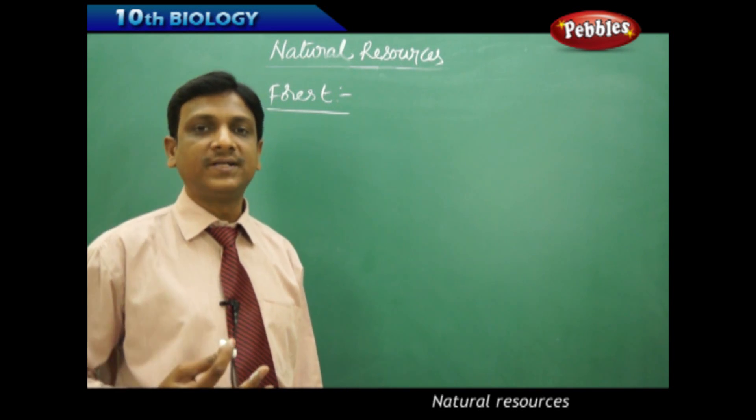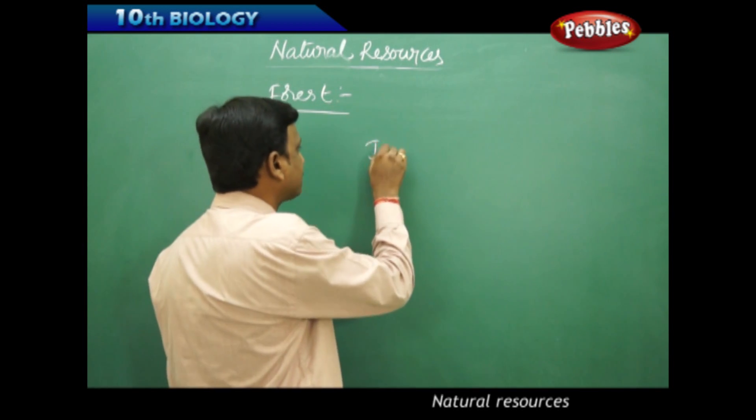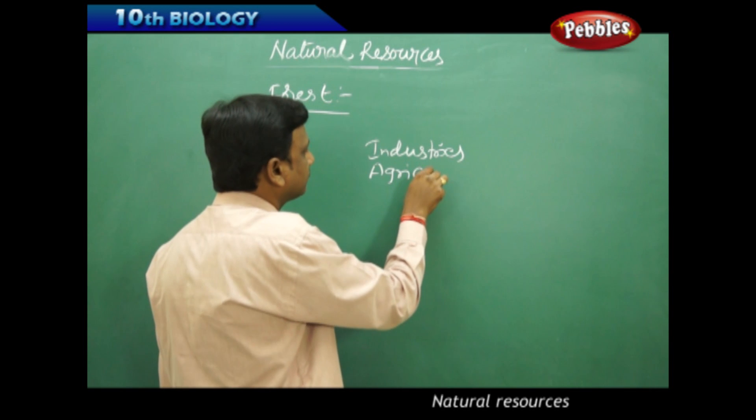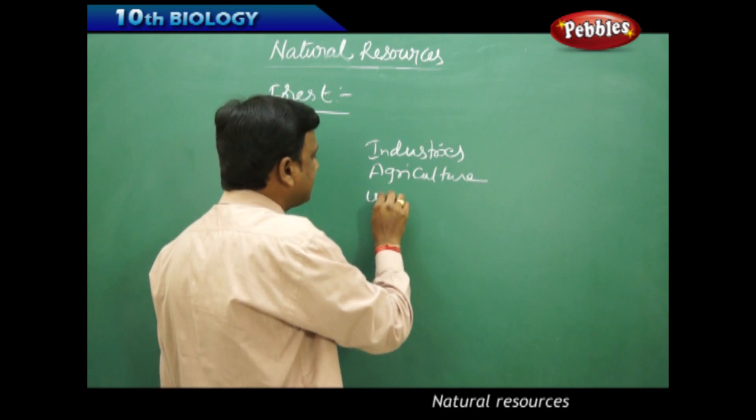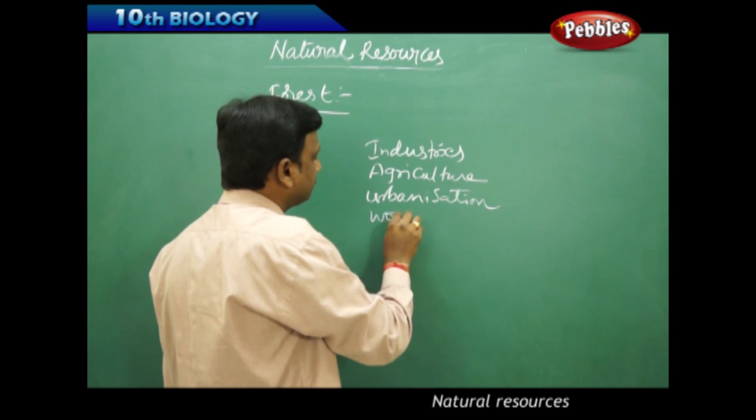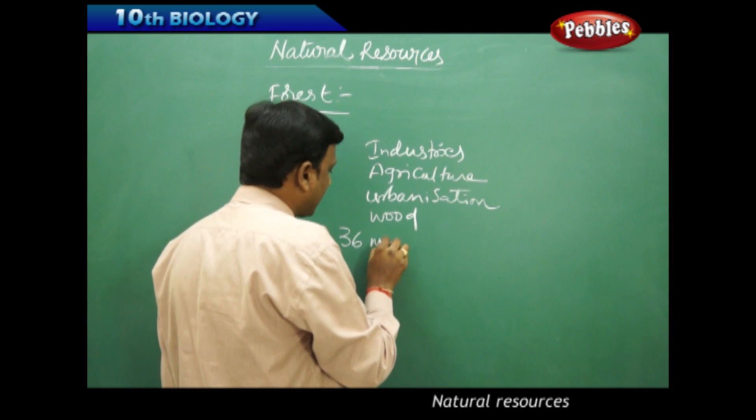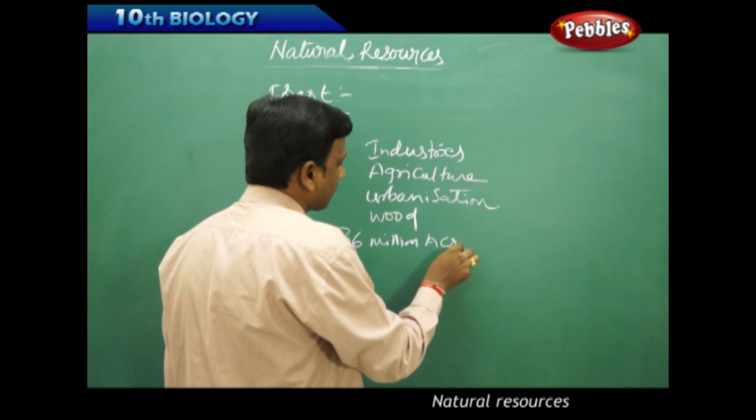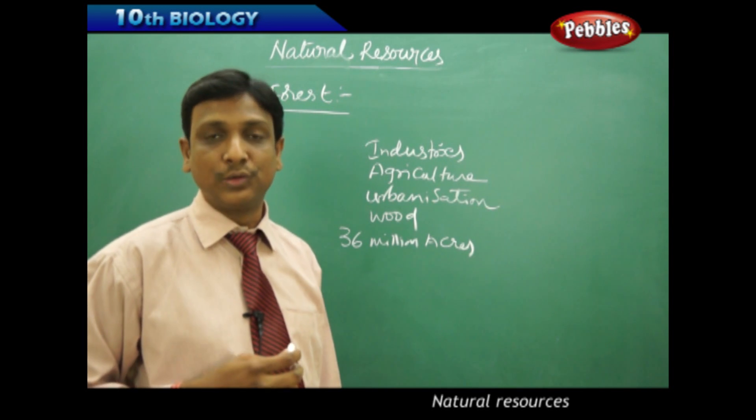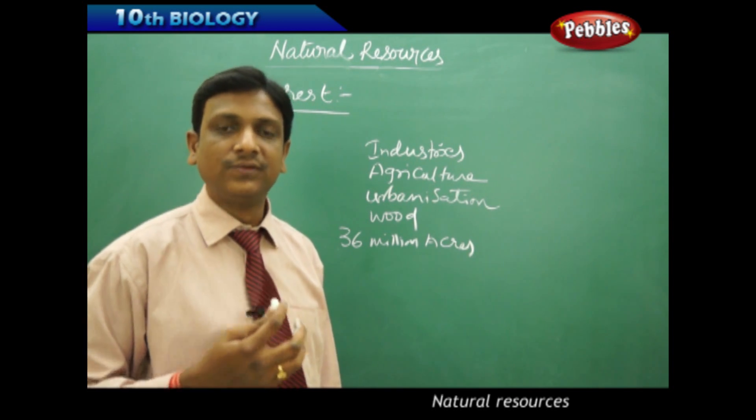So the forests are being exploited and deforestation takes place. The forest land is cleared for industries, for agriculture, for urbanization and cities, and for wood. Every year, 36 million acres—that means half the size of our state—that much amount of forest is disappeared from this globe because of deforestation activities.